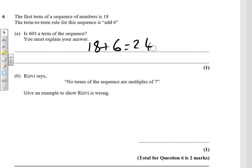get 24. We add another 6, we get 30. They're all even, so the sequence is even. 603 can't actually be in the sequence. Part (b): No terms of the sequence are multiples of seven. Give an